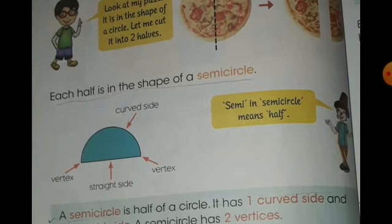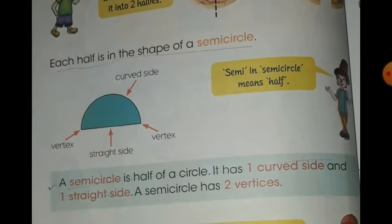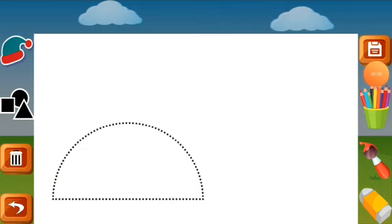As you can see, it is a semicircle. A semicircle is half of a circle. It has one curved side and one straight side. A semicircle has two vertices. Let's check. This is a semicircle.